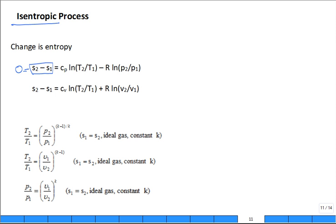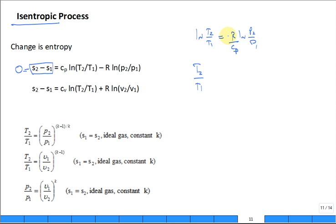Now I can rewrite this as C_P times the natural log of T2 over T1 equals R times the natural log of P2 over P1. I can bring that C_P over, giving me the natural log of T2 over T1 equals the natural log of P2 over P1 to the power of R divided by C_P.